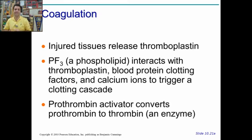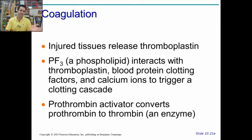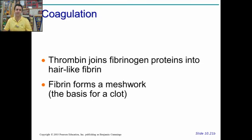That cascade gets us to prothrombin. Prothrombin gets converted to thrombin, and then thrombin converts fibrinogen into fibrin, which forms the clot.